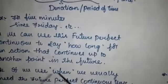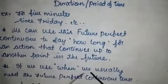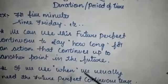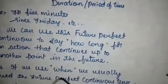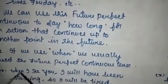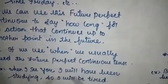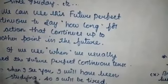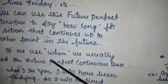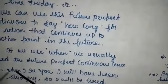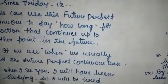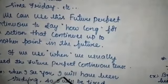Suppose if we use the word 'when,' we usually need to use future perfect continuous tense in the other clause. For example: 'When I see you, I will have been studying.' In the future, I will have been studying when I see you. So when 'when' is used, the other sentence should be in future perfect continuous tense: 'I will have been.' This is one key point to remember.